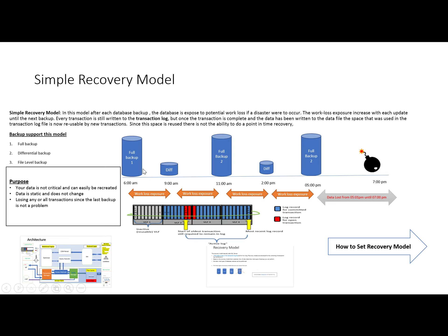To illustrate this, consider backups taken at 6am, 9am, and 11am as full backups, a differential backup at 2pm, and a full backup at 5pm. If a system crash occurs at 7pm before the next backup, the data entered between 5pm and 7pm will not be available. We have lost all that data and will have to recreate it, because this is the simple recovery model and point-in-time data recovery is not possible.